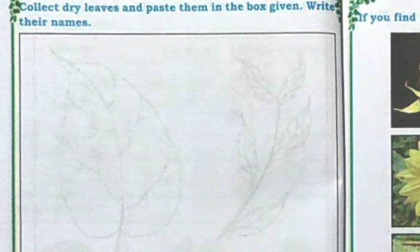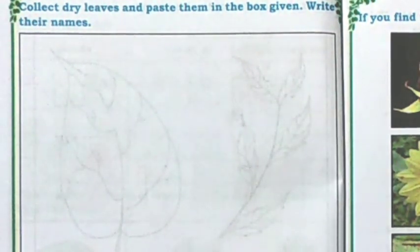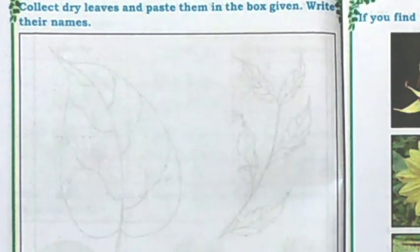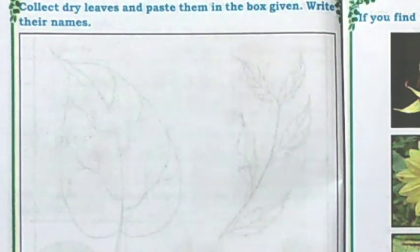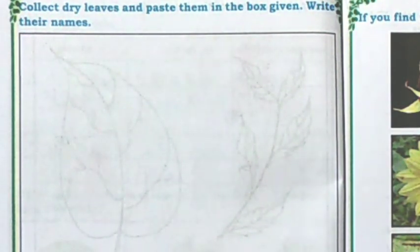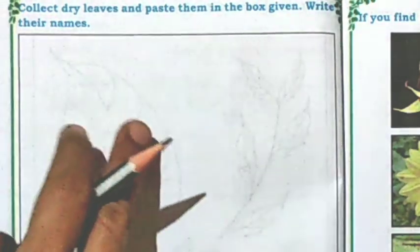Collect different kinds of leaves and place them in between pages of your old notebook or book. Let them dry for a week. Later, stick them here.